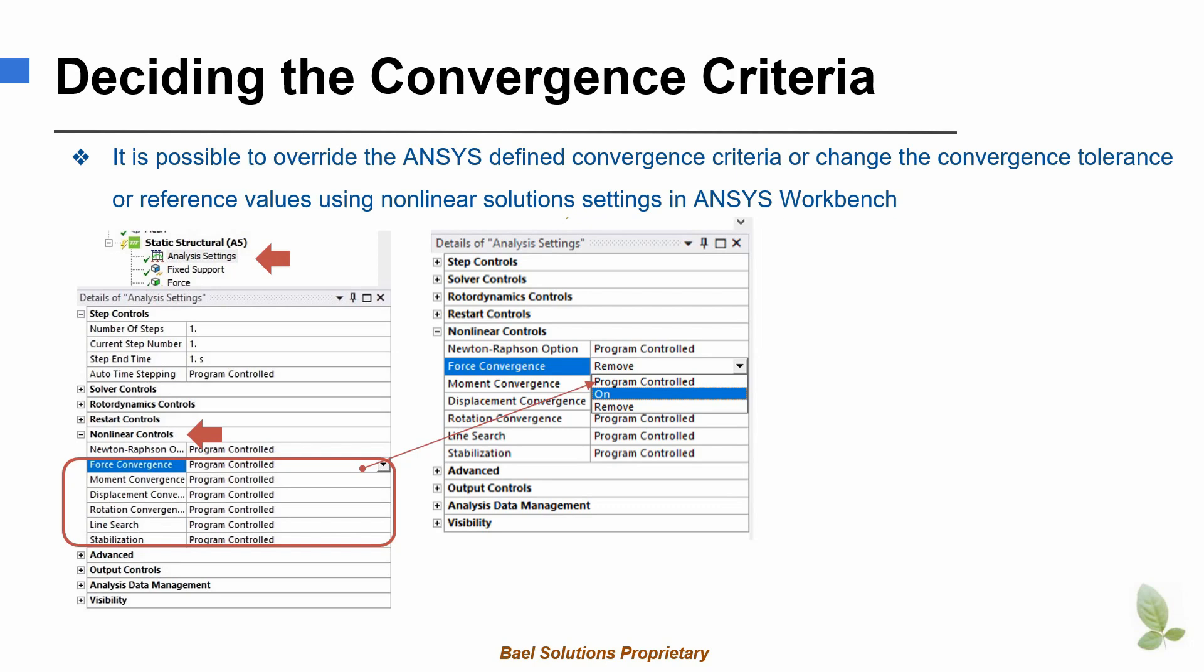In this setting, ANSYS decides which convergence criteria to set active. For example, if the model has beam or shell elements, moment and rotation convergence criteria are set active. If the model has only solid elements, rotation criteria may be deactivated.